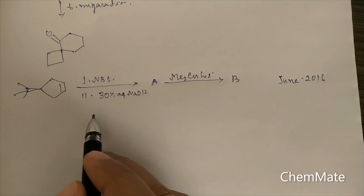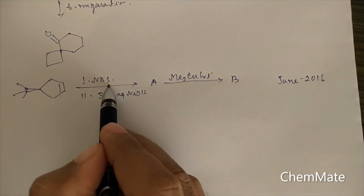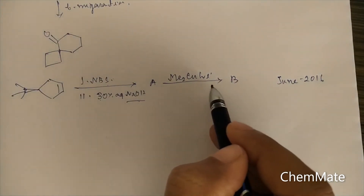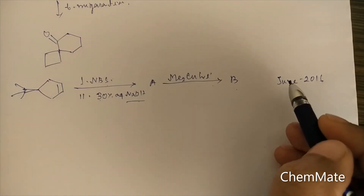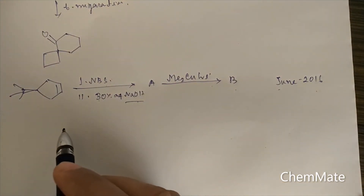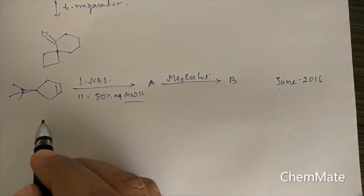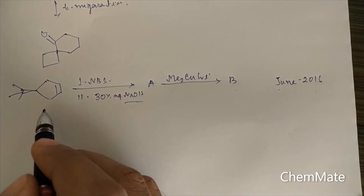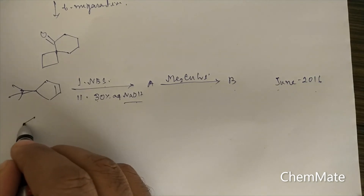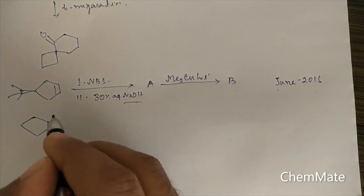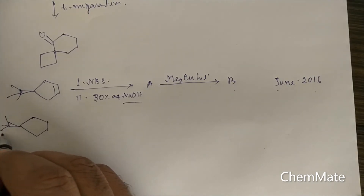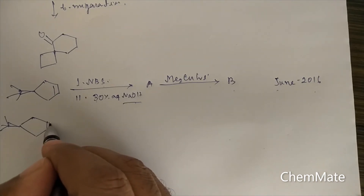Now we will discuss another question from CSIR NET June 2016. If a substrate is treated first with NBS, then with 30% aqueous NaOH, and then with Me2CuLi, what will be product B? The reaction goes through similar steps. First, NBS will produce a bromonium ion intermediate.